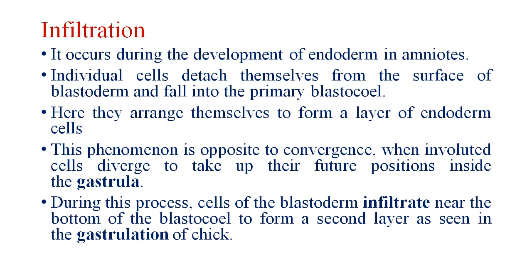Infiltration also occurs during the development of endoderm in amniotes. Endoderm cells detach themselves from the surface of the blastoderm and fall into the sub-blastodermic space. Here they arrange themselves to form a layer of endoderm cells. Cells of the blastoderm infiltrate near the bottom of the blastodermic space to form a second layer, as seen in the gastrulation of the chick.